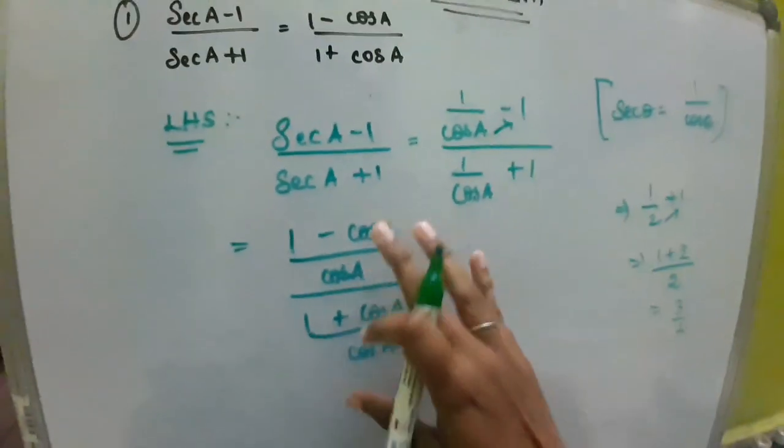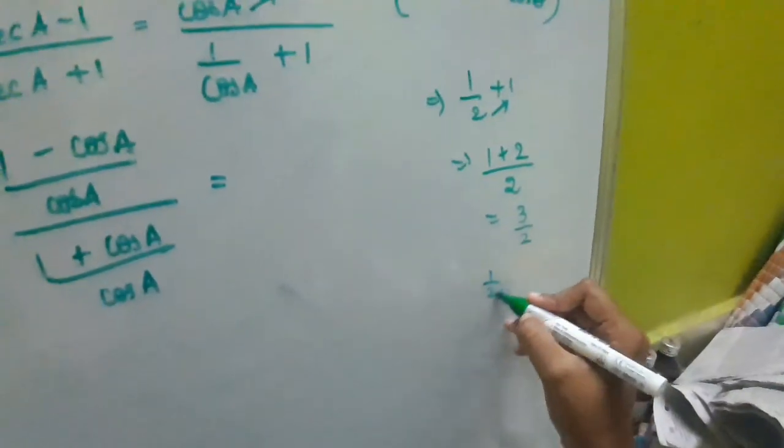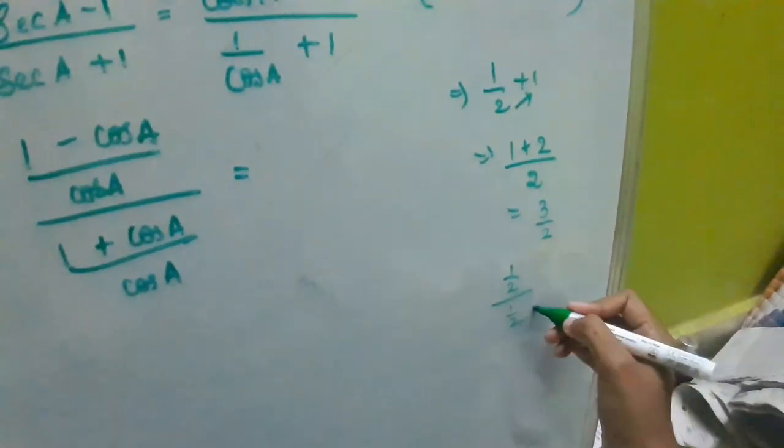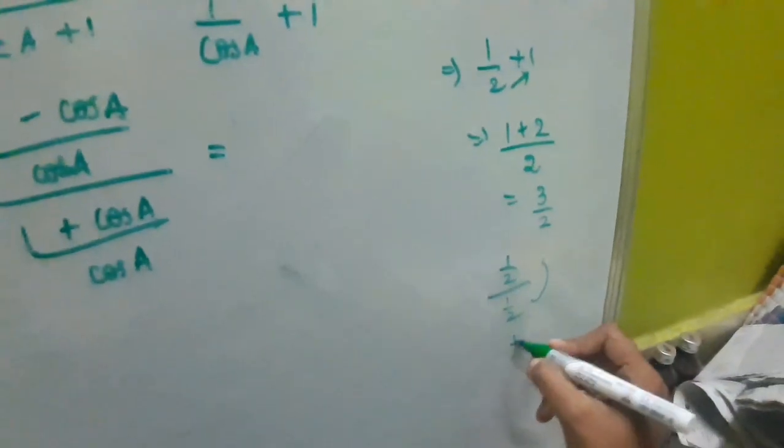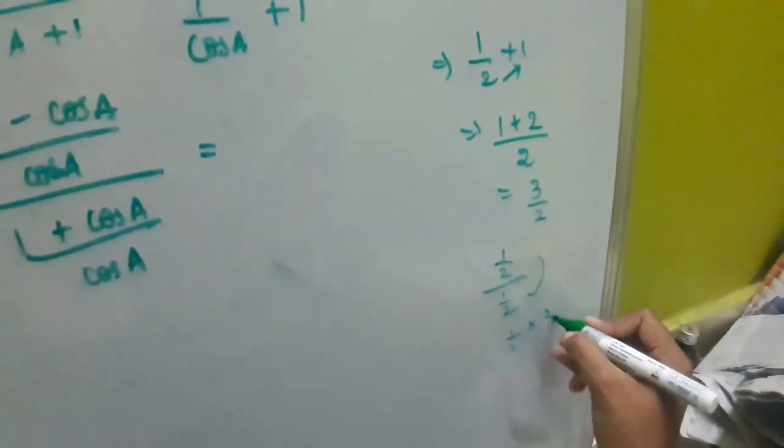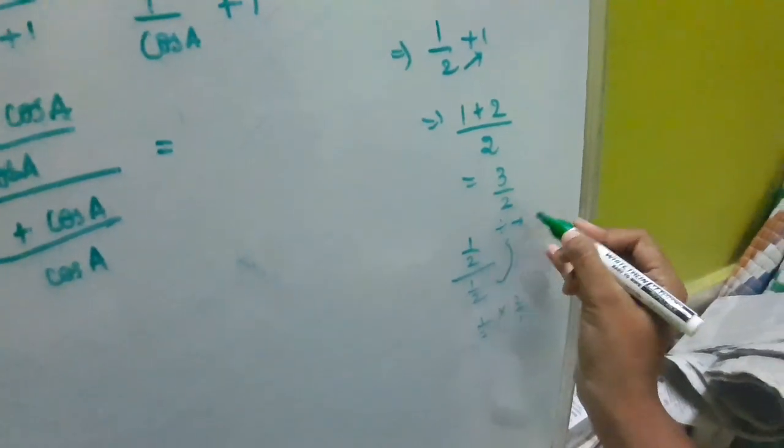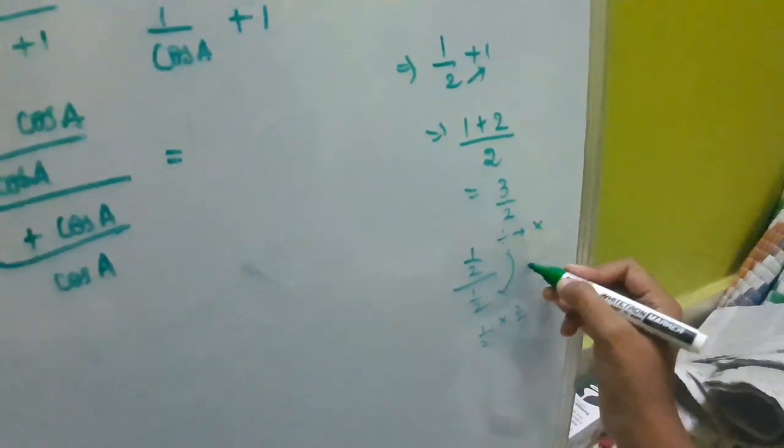Here, if there is 1 by 2 divided by 1 by 2, what we will do? I will take the denominator to the numerator and it will become multiplication: 1 by 2 into 2 by 1. When we convert divide to multiplication, it will get reciprocal.